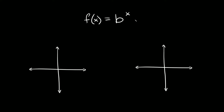This is the most basic equation for an exponential growth or decay function: f(x) = b raised to the x, or you'll also see it written as y = b raised to the x.